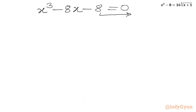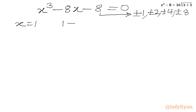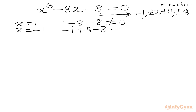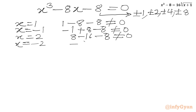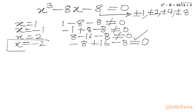Using the rational root theorem, the eligible factors of 8 are ±1, ±2, ±4, ±8. Testing x = 1: 1 - 8 - 8 ≠ 0. Testing x = -1: -1 + 8 - 8 ≠ 0. Testing x = 2: 8 - 16 - 8 ≠ 0. Testing x = -2: -8 + 16 - 8 = 0. Yes, x = -2 satisfies the equation, so x = -2 is our base solution.